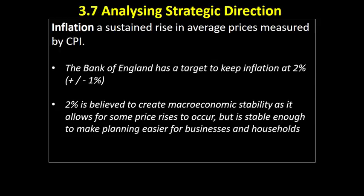2% is believed to create macroeconomic stability as it allows for some price rises to occur, meaning businesses can put up prices and consumers expect prices to go up a little bit. That allows businesses to make more profit, pay their workers a bit more, give a bit more back to shareholders, and provide profits for investment. But it's stable enough so planning is easier for both businesses and households.